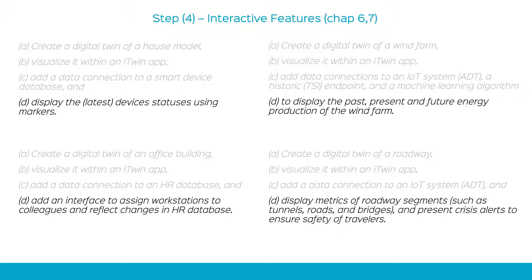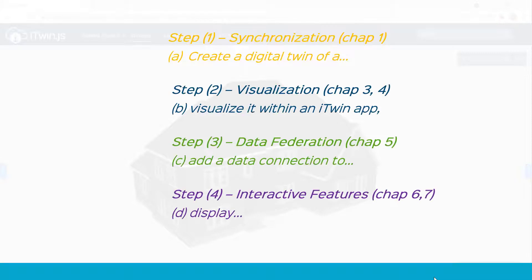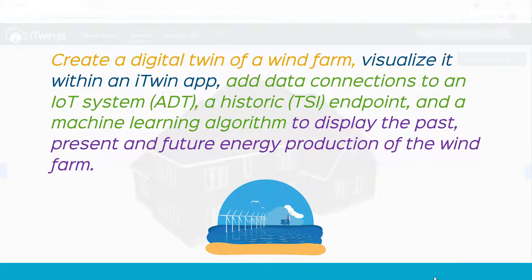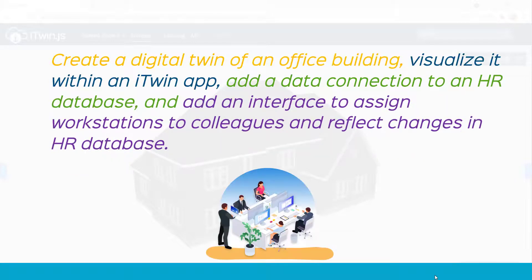I'll post a link to our documentation and some samples so you have an opportunity to apply your creativity and design your own unique way to fulfill your use case. To summarize, we have four main steps: synchronize your design files to create your digital twin; pull it within an iTwin app to start visualizing it; add data connections to build value for your twin; and use the resulting data to design interactive features to bring your use case home. Let's color code these and head back to our use cases — you'll notice we applied the same core principles to solve all these digital twin use cases, and this is exactly what you'll be looking for when solving your own.